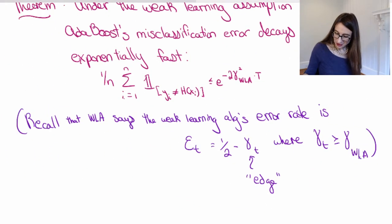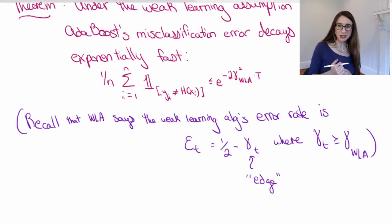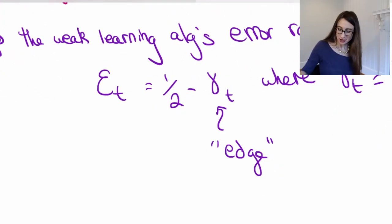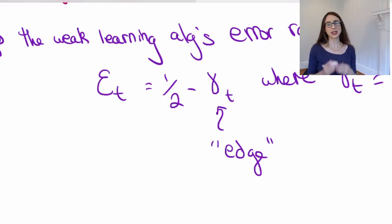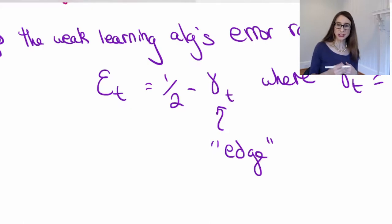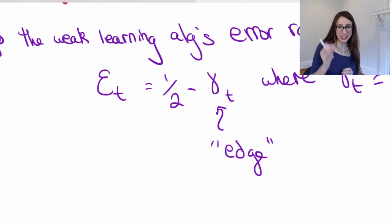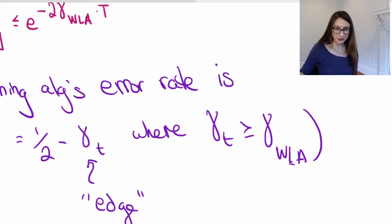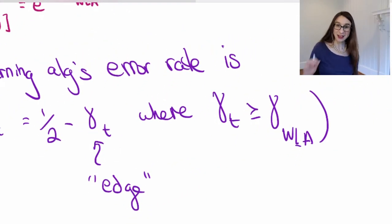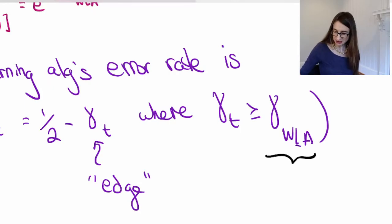The weak learning assumption says that the error rate of the weak learning algorithm is always a little bit less than one-half. The amount that it's less than a half is called the edge. So epsilon_T, the error rate, has to be less than a half for the weak learning algorithm, no matter what distribution you put into it. It has to give you a little bonus over one-half, and the amount that it's better than a half is called the edge — the edge over random guessing. The weak learning assumption is that that edge is always bigger than gamma_WLA, which is strictly bigger than zero.